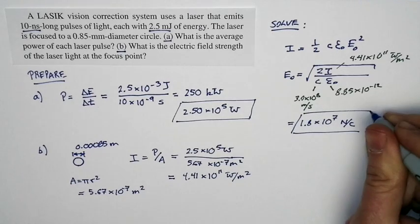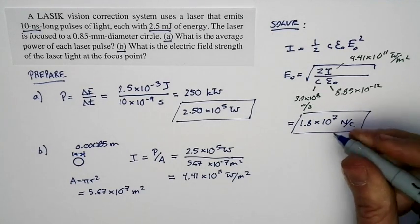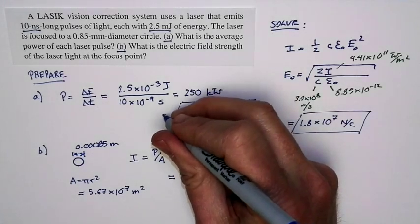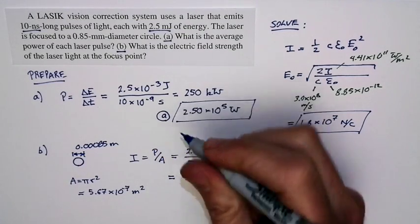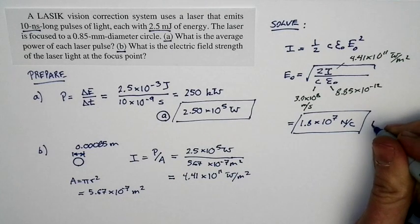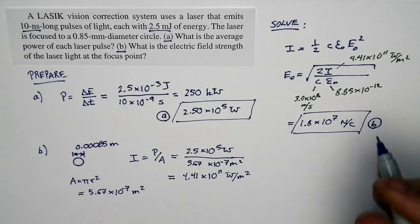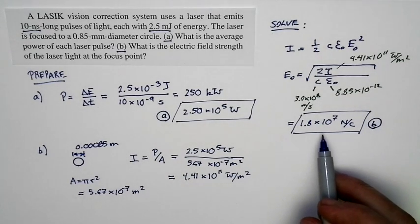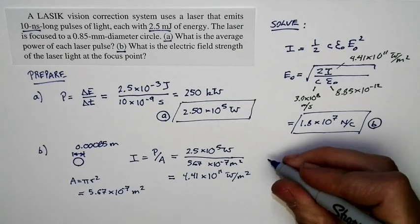That is a very strong electric field. So to sum up: part A, the power of the pulse, 2.5 times 10 to the 5th watts. Part B, the magnitude of the electric field in each pulse, 1.8 times 10 to the 7th newtons per coulomb.